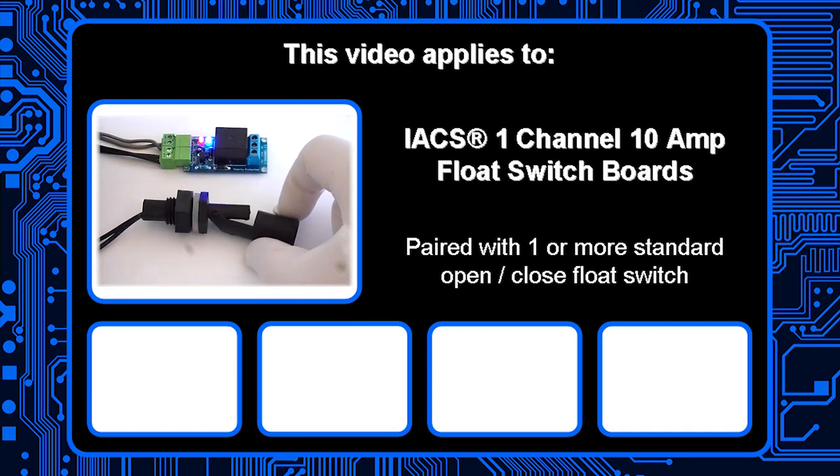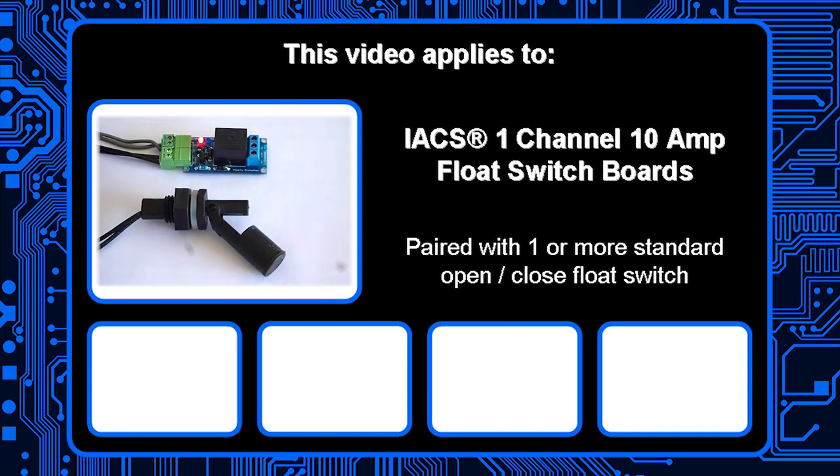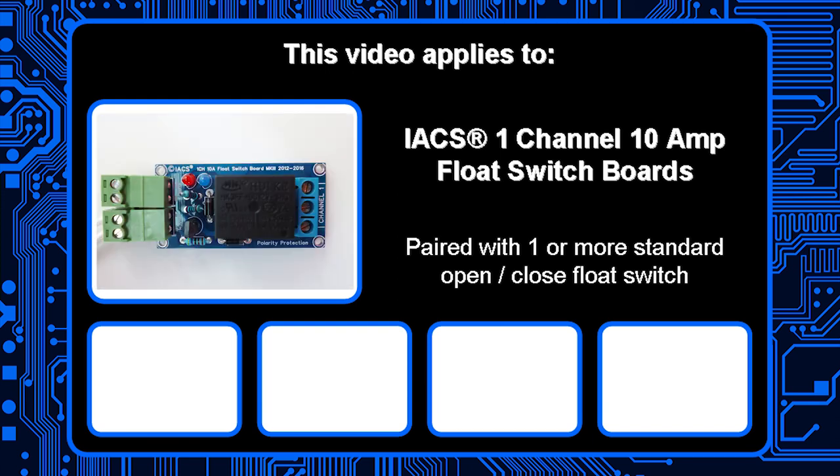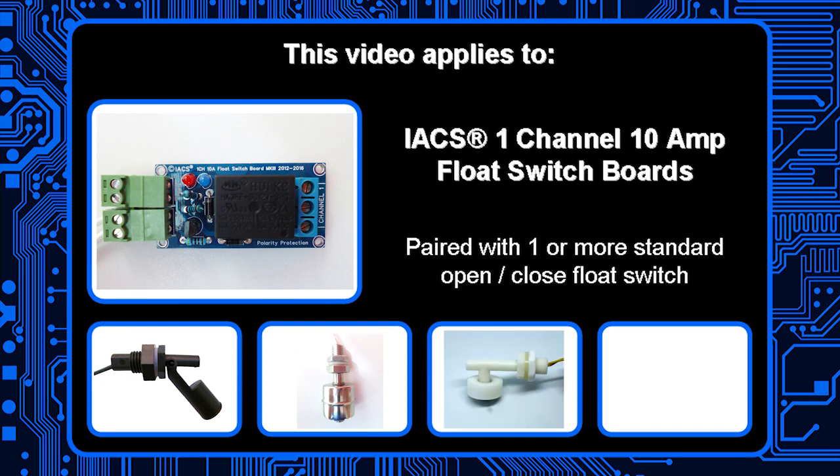Our most popular combination we have here is known as the float kit 1, consisting of a 10 amp rated relay board and a black polypropylene float switch. A few other examples of float switches include stainless steel barrel switches, lightweight white plastic switches, right angle barrel switches, and blind hole stainless steel float switches.